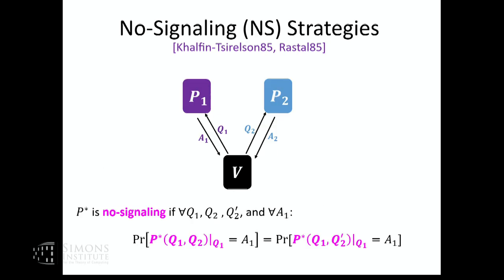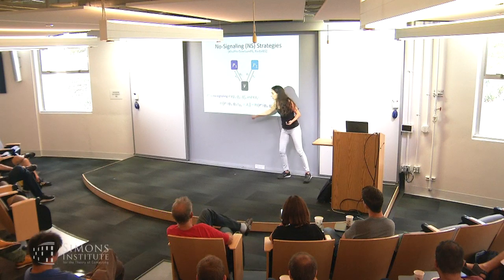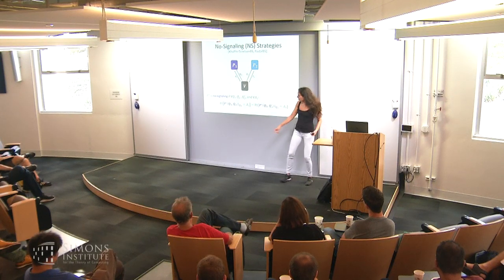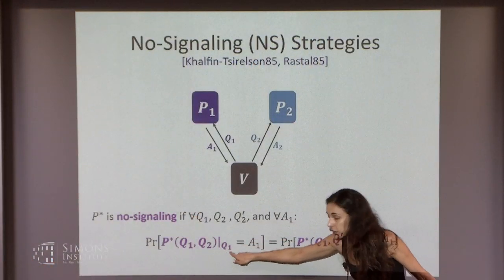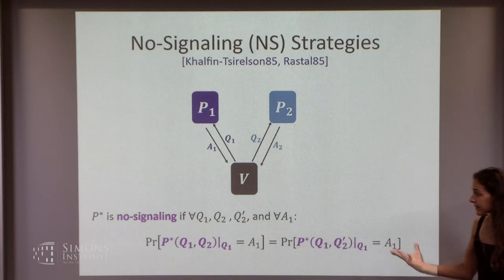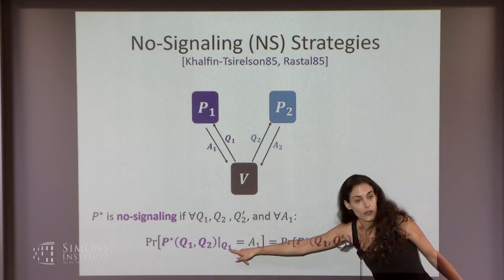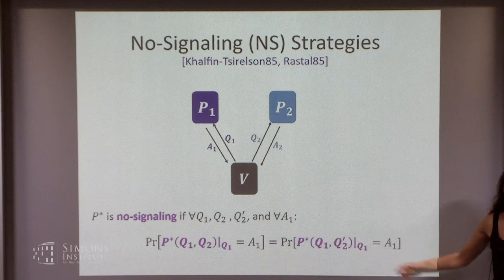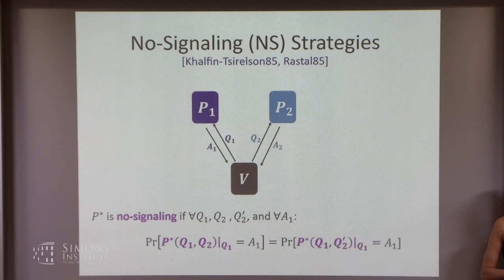However, their hands are tied. Even though prover one sees the other query, his answer should not signal any information about what the other query is. More formally: in a no-signaling strategy, no matter what query prover one gets Q1, for any two other queries that prover two gets, the distribution of his answer restricted to Q1 is the same whether the other query is Q2 or Q2 prime.